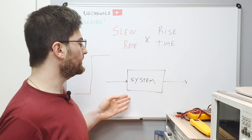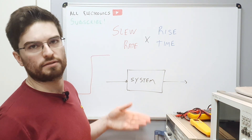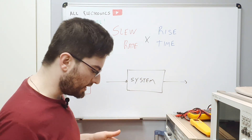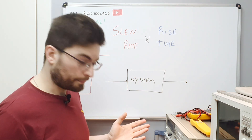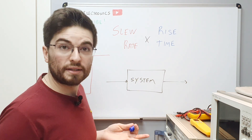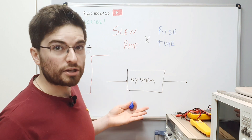If the system is ideal—that's not a real-life example—the rise time will be the same because the properties of the system did not change.